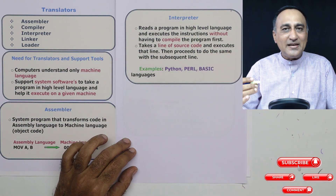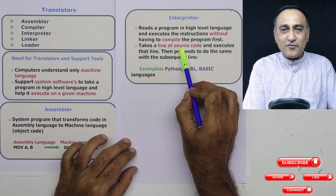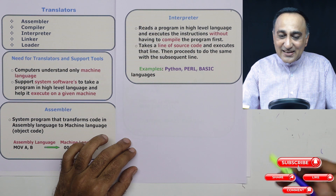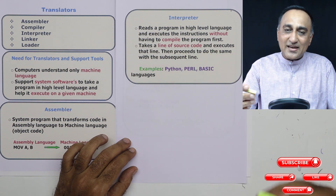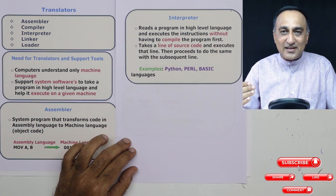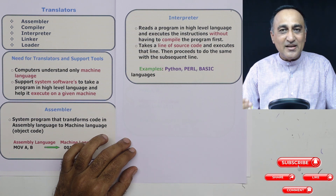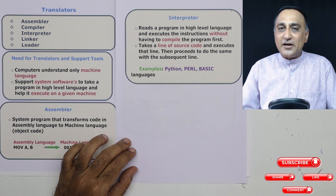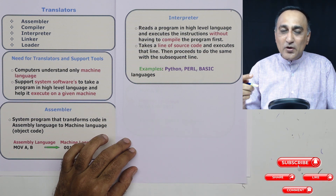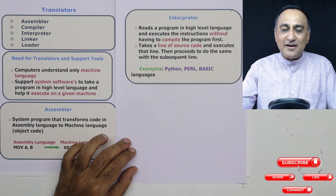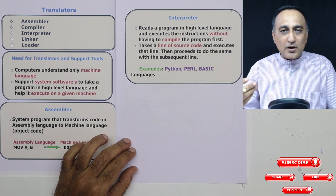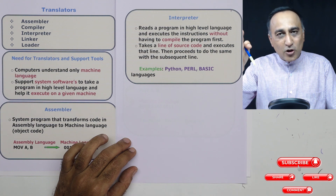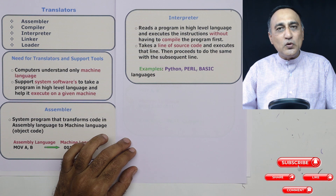The interpreter takes lines of a program written in high level language, converts each line into object code or machine level language, executes that line, then reads the next line, converts it, and executes it again. This process repeats until either the program completes or the first error is encountered, at which point the interpreter stops. A compiler, by contrast, takes the entire program, converts it completely into object code, and only then allows linking and loading into main memory to run. A compiler will compile or translate the entire program and list all errors before allowing you to run it.